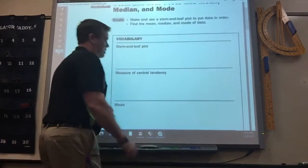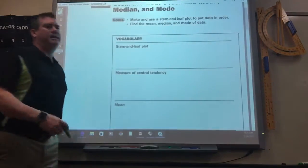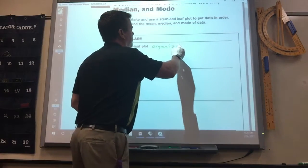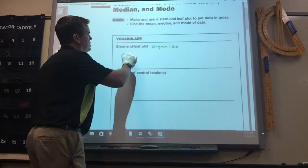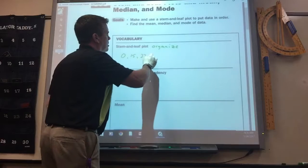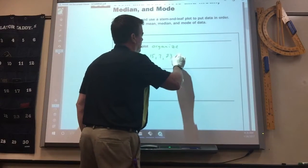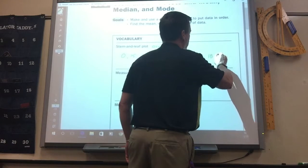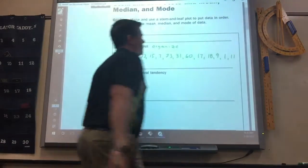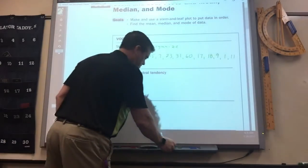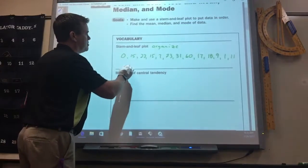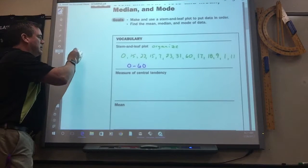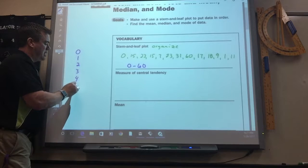Okay, stem and leaf plots are real simple. If you've got a list of numbers, it's just another way to organize data. So if you've got a bunch of numbers, to put them in a stem and leaf plot, this range is from 0 to 60. So what I would do then is I'd put 0, 1, 2, 3, 4, 5, 6.